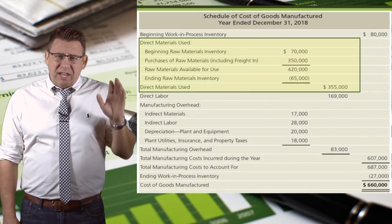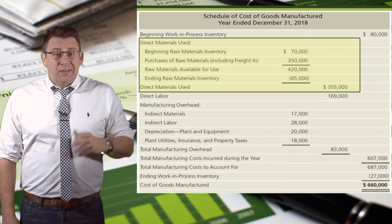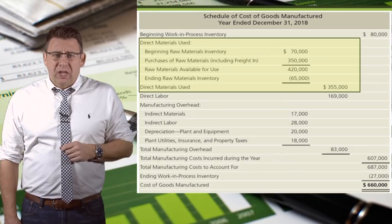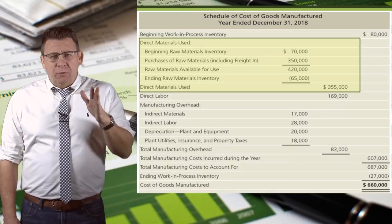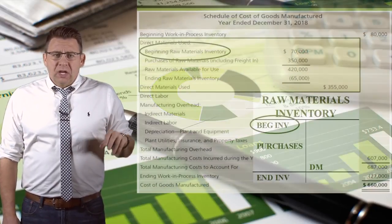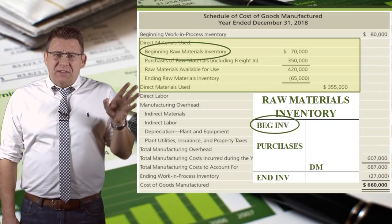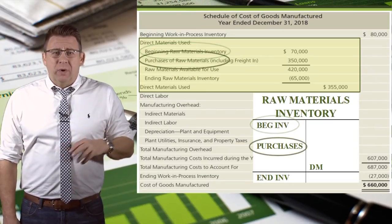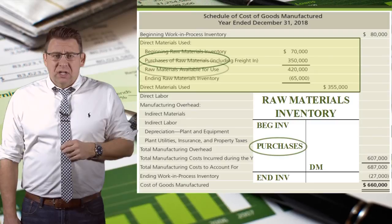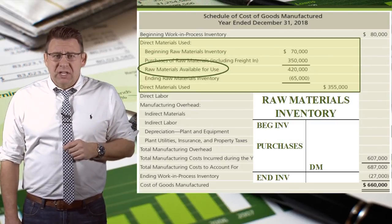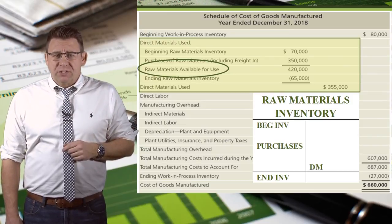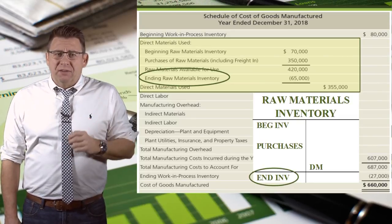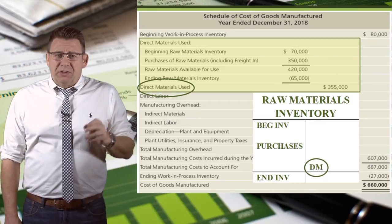The only part of this schedule we haven't reviewed yet is the materials section. This section is basically the transactions that occurred in our raw material inventory account, and it is how we calculate direct materials if we aren't given that information. This section starts with beginning raw materials inventory — again, just the same as the T account. Then we add purchases of raw materials, so beginning inventory plus purchases equal the raw materials available for use. Since there are only two things that can happen to the available raw materials, we subtract ending inventory to arrive at direct materials used in production.